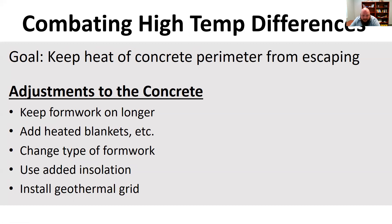To combat high temperature differences between the core and the formwork, one of the most basic approaches is to keep the formwork on longer, add heated blankets or plastic to retain some heat, so the outside isn't releasing all its heat and getting much cooler. Sometimes you need to change your formwork type — instead of steel, you might use wood forms or add insulation to the formwork, considering the R-values of different types.